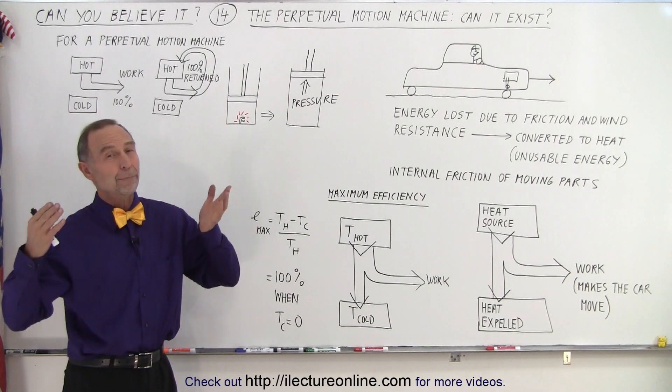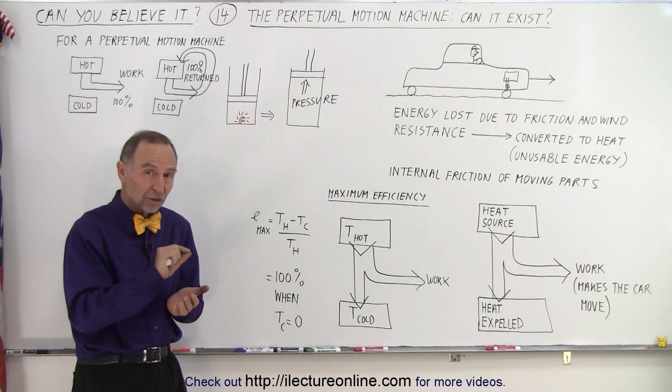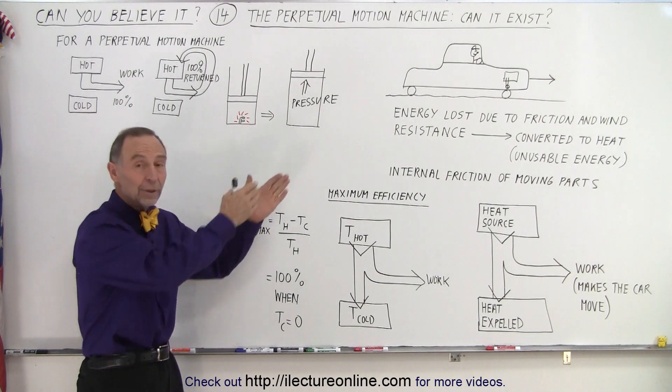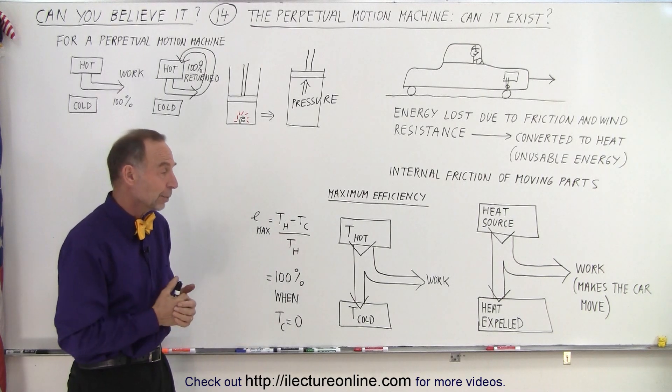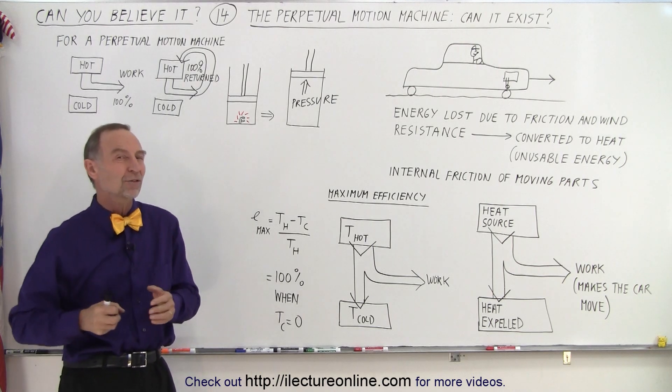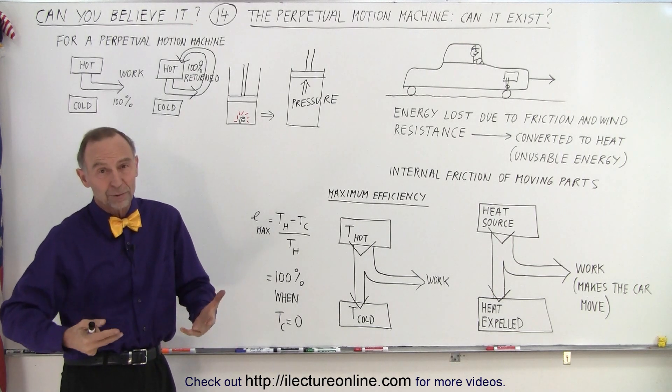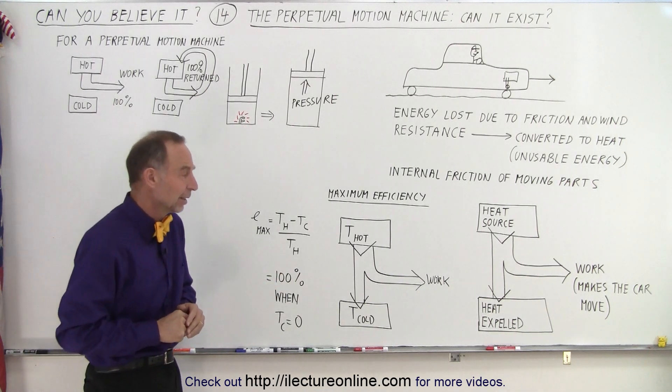So in order to build a perpetual motion machine, those two things need to be possible. No energy loss whatsoever for any reason—friction, wind resistance, you name it—which you know is not possible. And secondly, no energy loss due to any heat being expelled, which we know is also not possible. You cannot cool the expelled air down to zero degrees Kelvin.